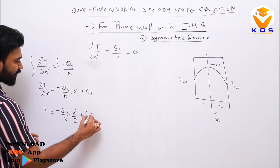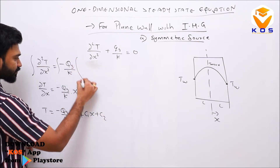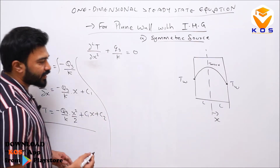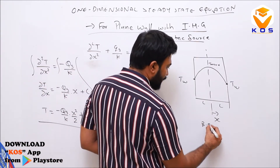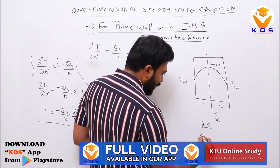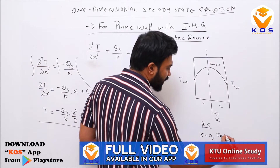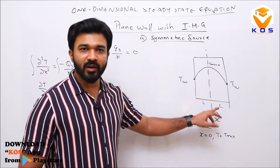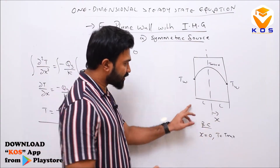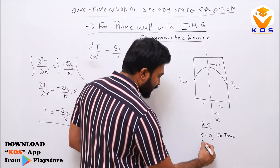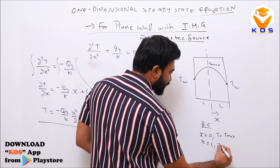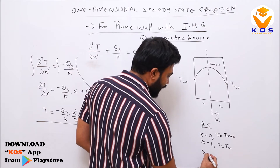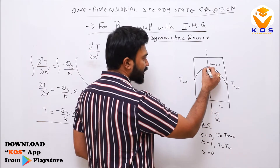Integrating again: T = −qg/k · x²/2 + C1·x + C2. Now we apply boundary conditions. At x = 0, T = T_maximum, and at x = L, T = T_w.